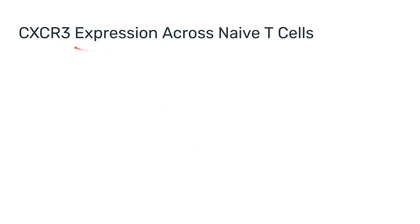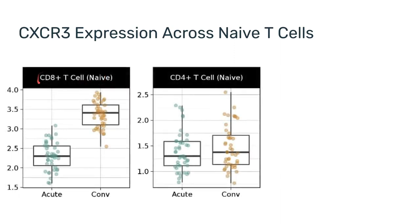Here is another interesting trend. We're now looking at CXCR3, which is a chemokine receptor across naive T-cells. If we look at the naive CD8+ T-cells, the level of CXCR3 goes up between the acute and convalescent time points. However, for naive CD4+ T-cells, it stays about the same.